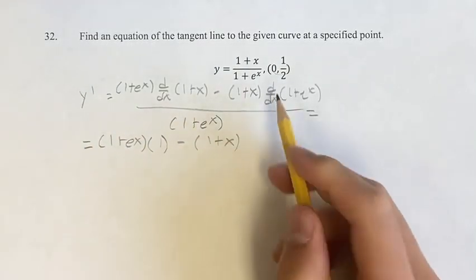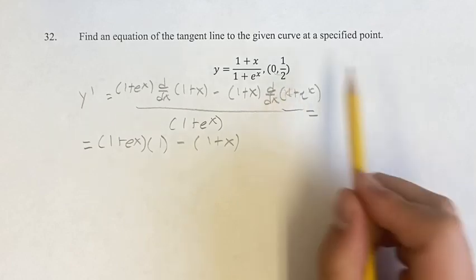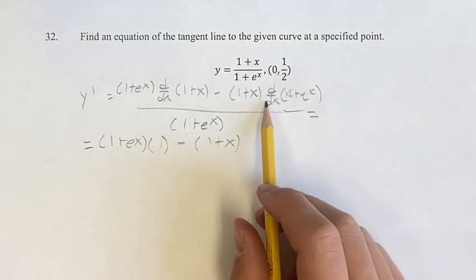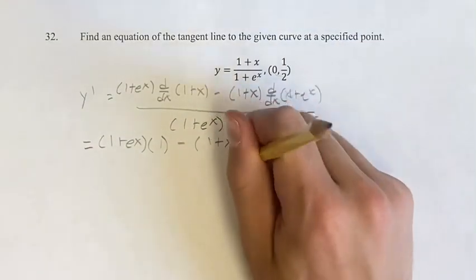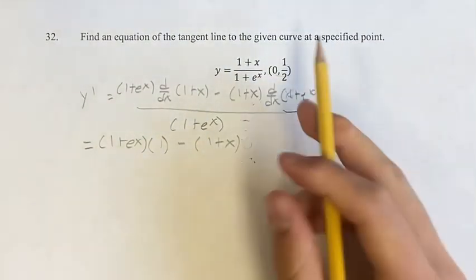1 plus x times the derivative of 1, again, is 0. So you can basically just ignore that. So we're looking at the derivative of e^x is e^x. This is going to come out to e^x.